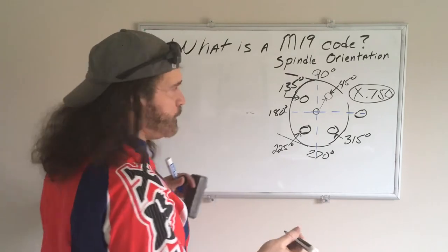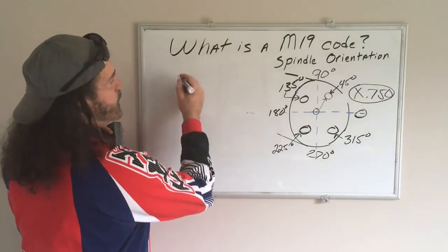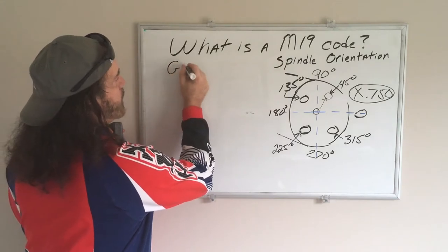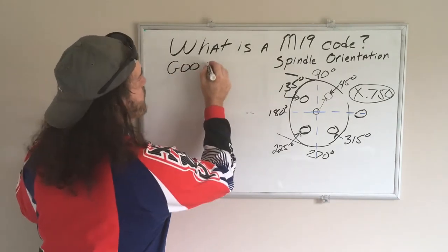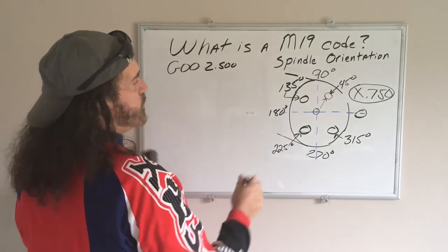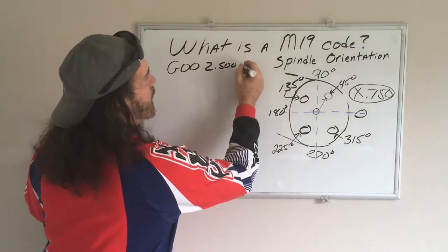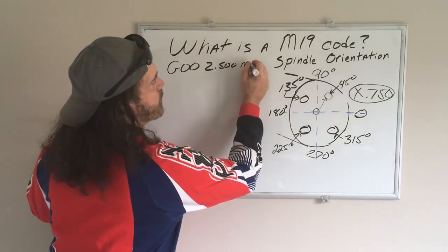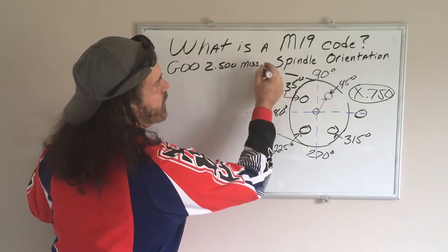Let's say we're going to rapid a half inch in front of the part, which would be Z0.500, or the tooling is a half inch in front of the part. I'm going to turn on my live tooling, which is an M133, and we'll give it an RPM of 2000.